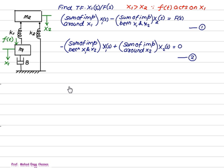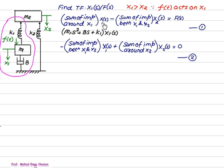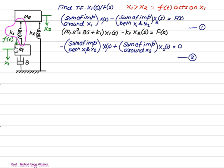The sum of impedances around x1: x1 is connected to m1, and to m1 we have k1 and b. Impedance of k1 is k1, impedance of m1 is m1·s², impedance of b is b·s, all multiplied by x1(s). The sum of impedances between x1 and x2 — only k1 is connected between x1 and x2. Remember, k2 is connected between x2 and ground, so there is only one element k1, multiplied by x2(s), equals F(s), because the force is applied on x1(s).